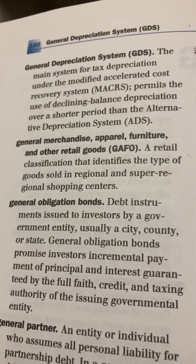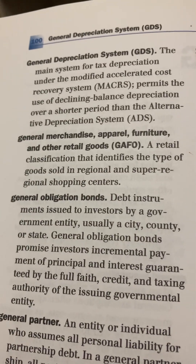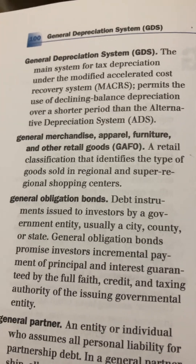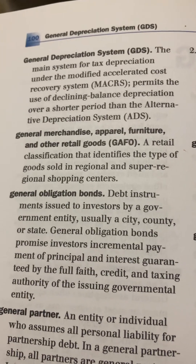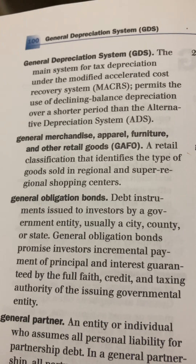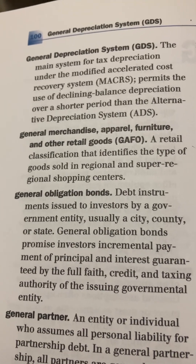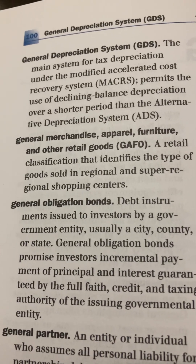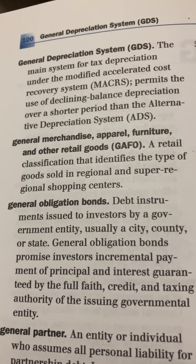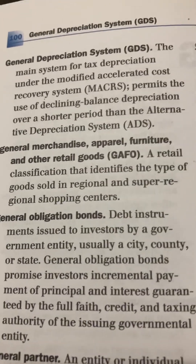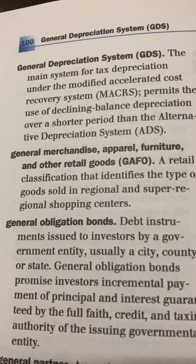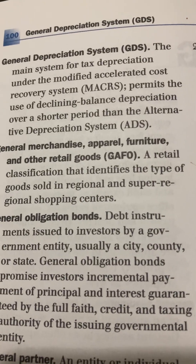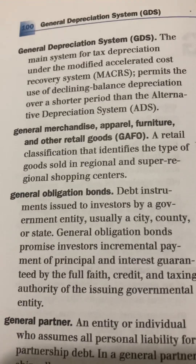The Dictionary of Real Estate Appraisal, page 100, Chapter G Continued. General Depreciation System, GDS — the main system for tax depreciation under the Modified Accelerated Cost Recovery System, MACRS. It permits the use of declining-balance depreciation over a shorter period than the Alternative Depreciation System, ADS.